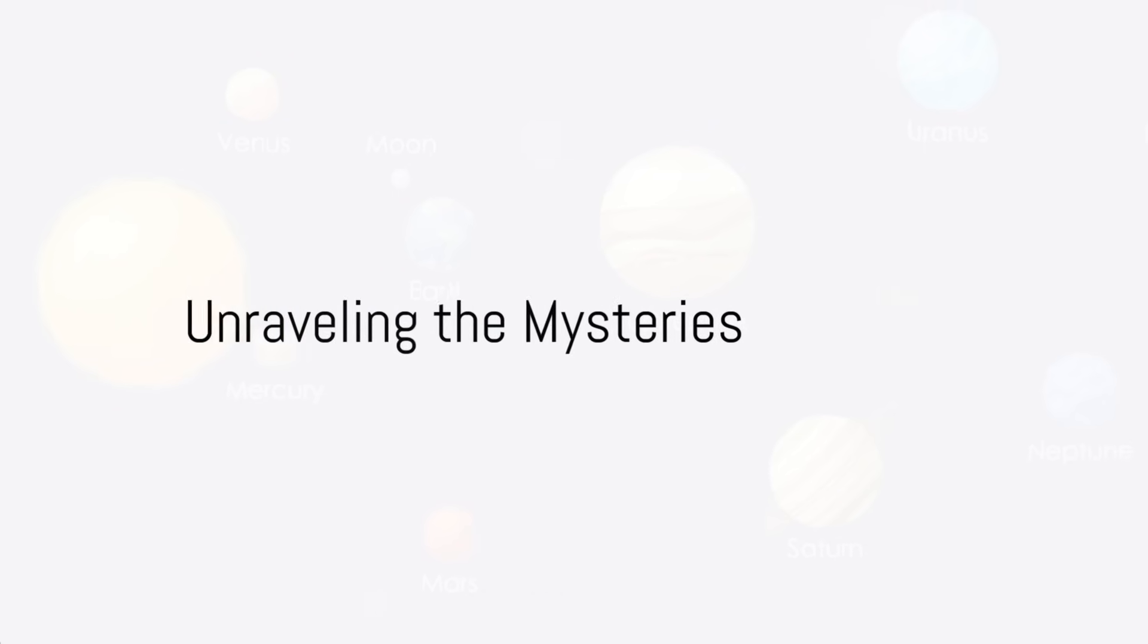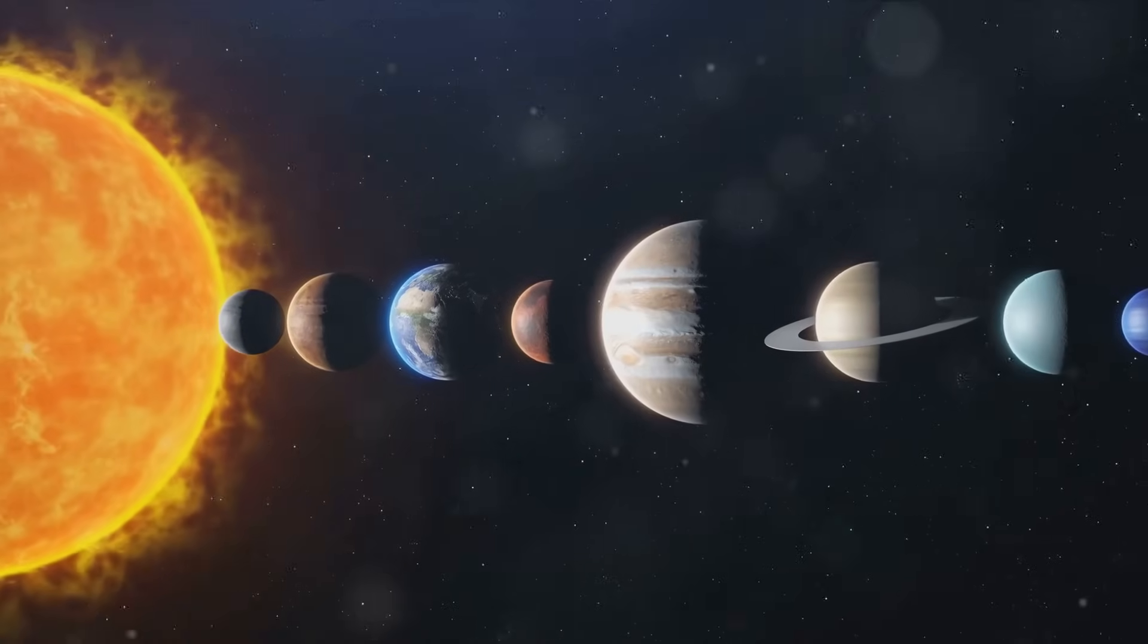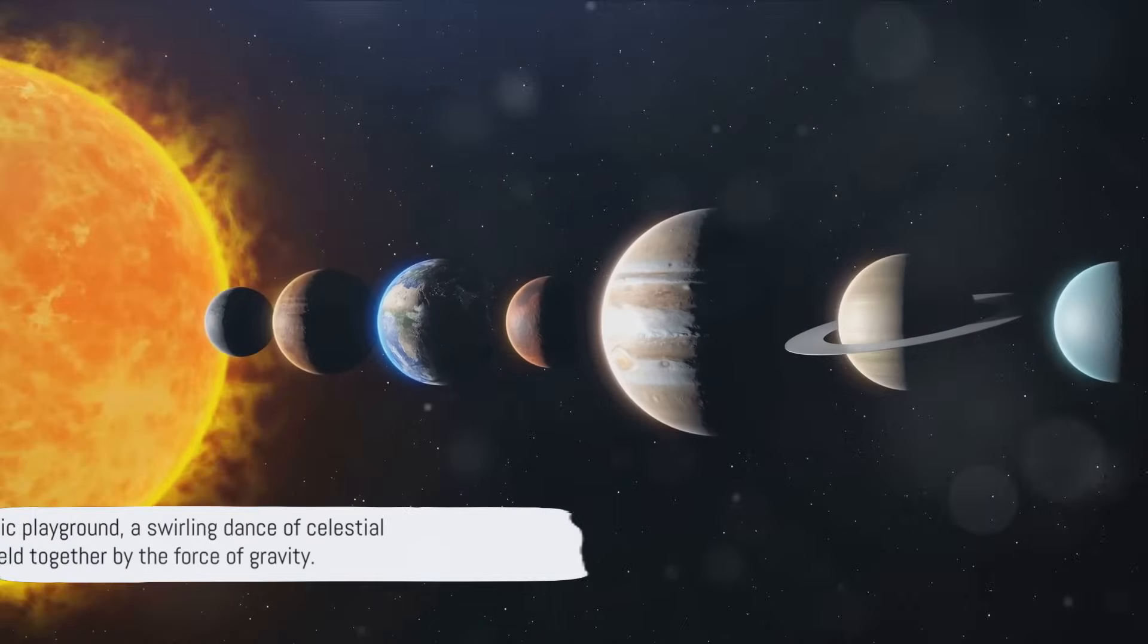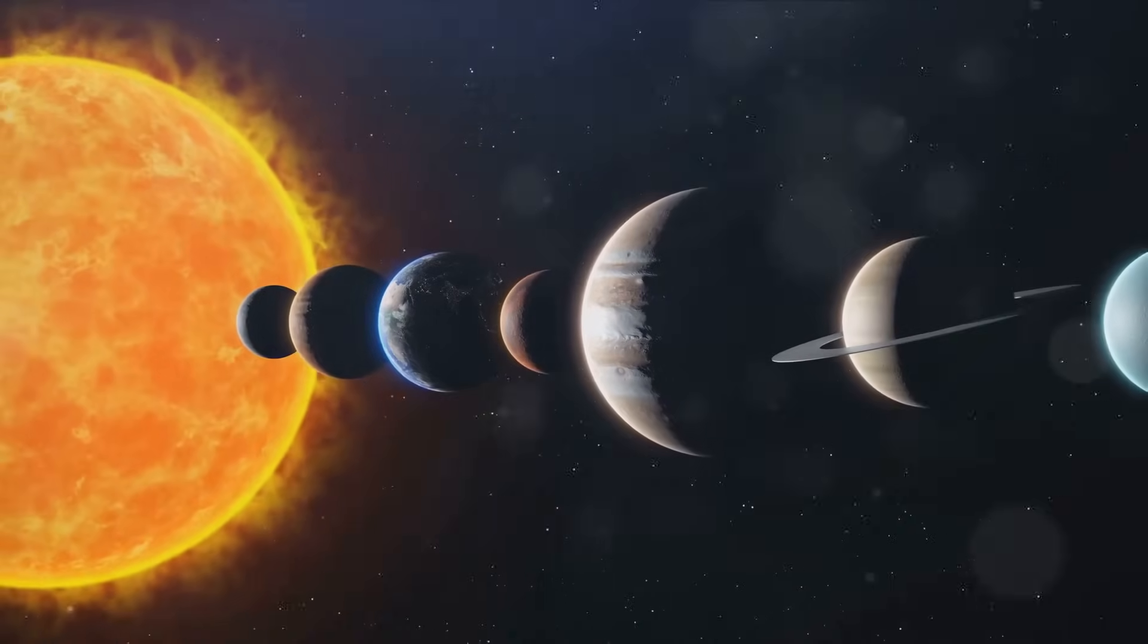Did you know that our solar system has been around for approximately 4.6 billion years? Shocking, isn't it? It's a vast cosmic playground, a swirling dance of celestial bodies, all held together by the force of gravity.